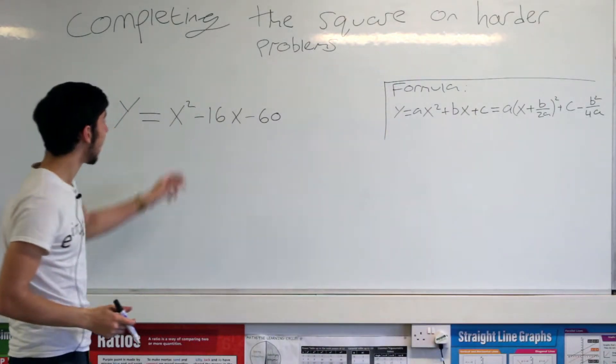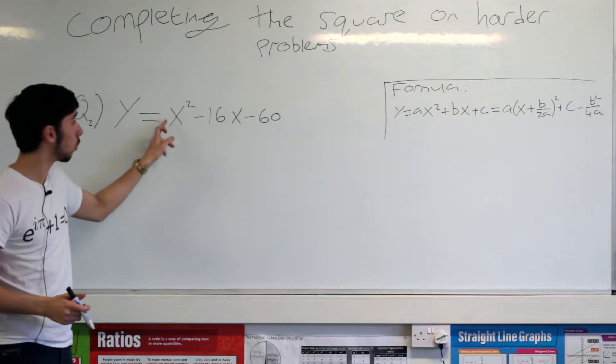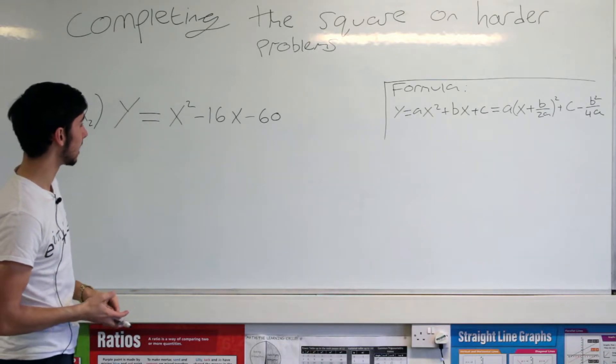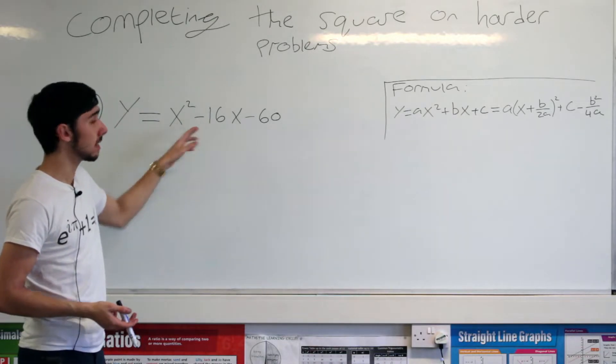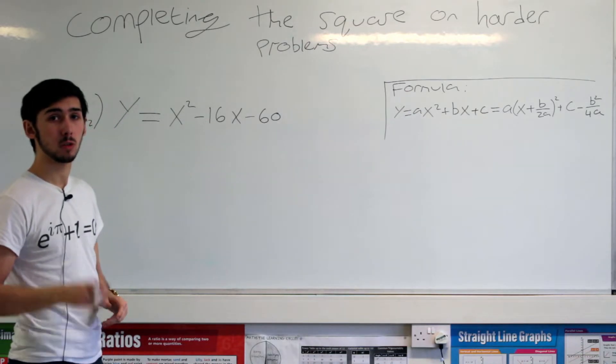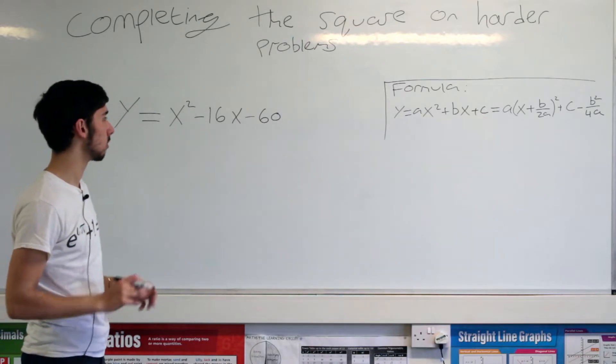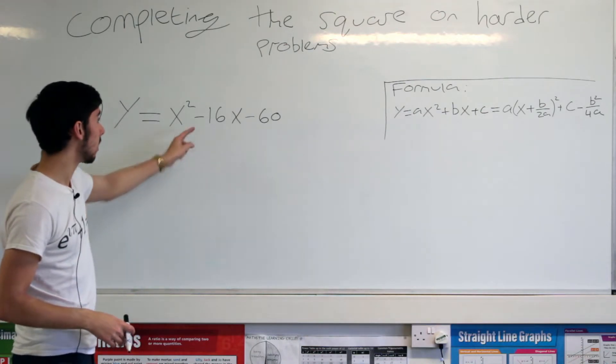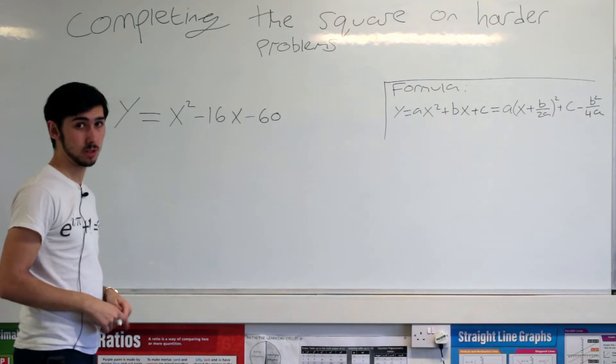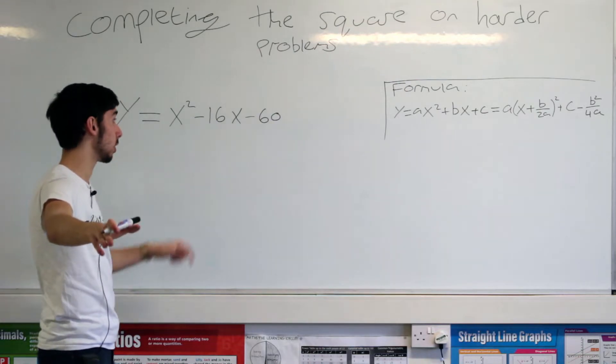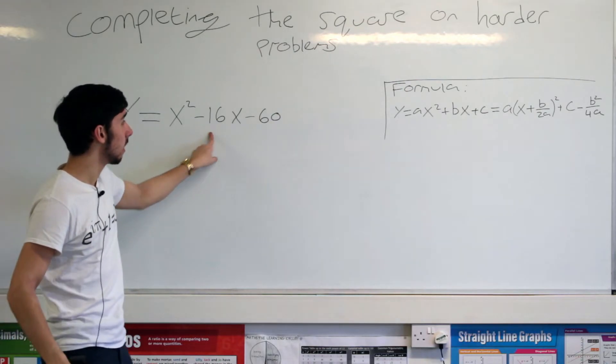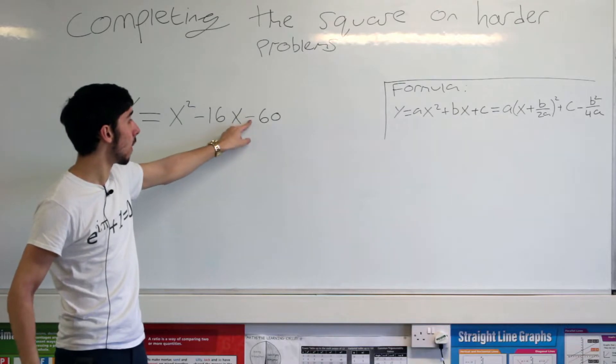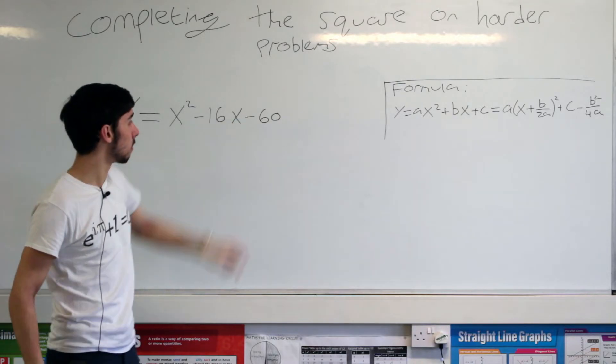Okay, so what's a? a is 1, isn't it? 1 lot of x squared, as we can clearly see there. What's b? Well, b is clearly 16, isn't it? Wrong. Wrong. Wrong, guys. You're silly. It's going to be minus 16. The minus in front matters. Okay, so I'm making sure you're paying attention. b is minus 16. What's c? c is minus, again, 60, minus 60.